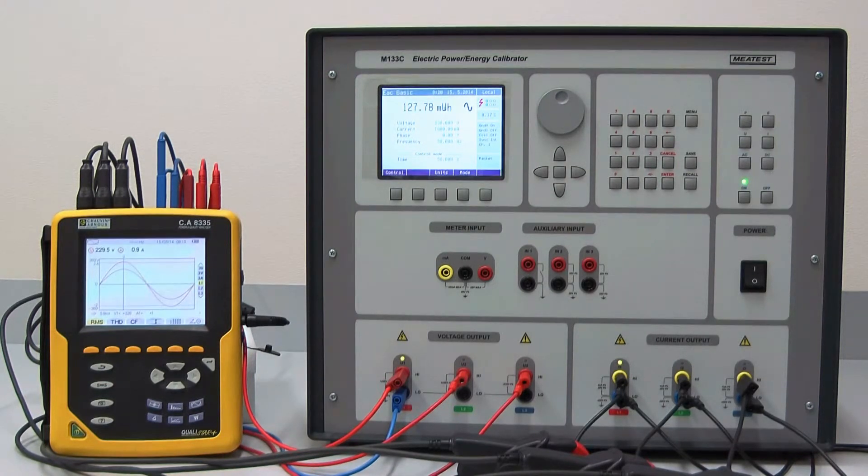Except power, voltage and current calibration, the M133C can also calibrate energy meters with most of its power distortion functions still available. With dosing function, built-in process multimeter and the right software, the calibration process can't get any easier.